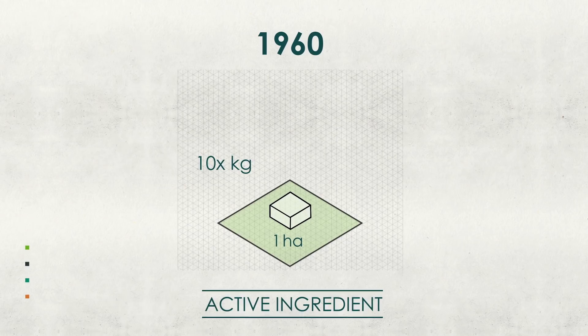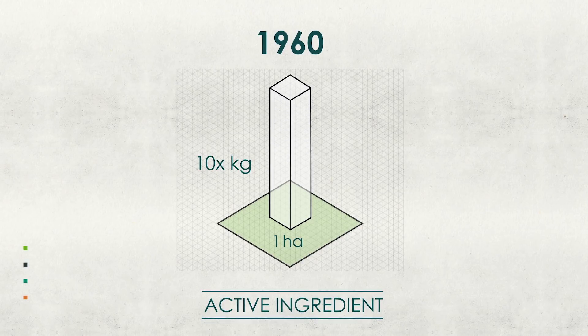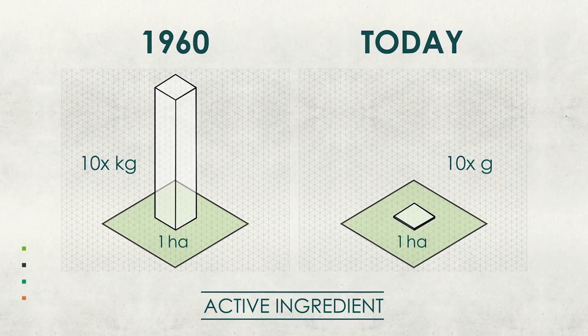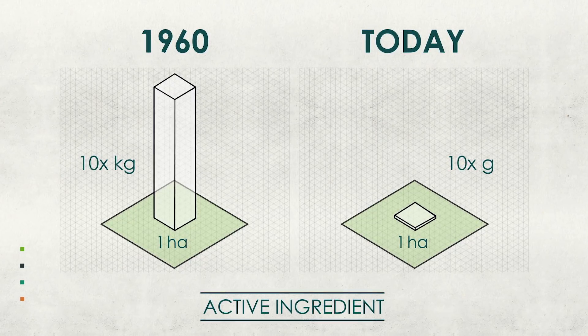This has had a huge benefit. Back in the 1960s, there were tens of kilos of active ingredient being applied to a hectare of a field. Today, it's tens of grams — it's miniscule. Because of this precision, over the last 30 years, we've lost 30% of active ingredients globally because they no longer work effectively or they no longer meet societal expectations.